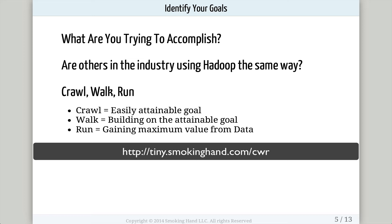This is especially important as you start your first big data solution. You want to start crawling by having an easily attainable goal — this may be something as simple as starting to store all of your data in Hadoop. From there you can start walking, building on the work you've already done in the crawl step. At this point you have all your data in Hadoop and can start analyzing it. You may not be able to do complex analysis, but you will start gaining value from your data. The next step is to run — gaining the maximum value from your data through complex analysis. By creating your big data solution in several steps, you prevent yourself from getting bogged down in minutiae while still starting to gain value.